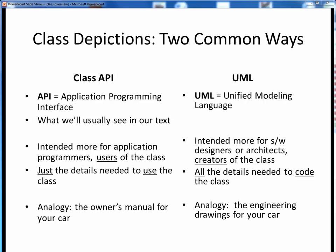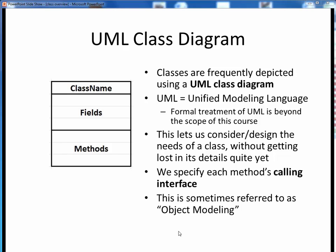So we've just seen both the API and the UML for a new Java class. Here's a summary of the differences between them. The API is what we'll usually see in our text when new classes are introduced. But remember, CS12Date is something that I came up with, so you won't find it anywhere in the textbook. An API is intended for application programmers such as ourselves — for users of a class. It gives us only enough details to be able to use a class. By contrast, UML is usually intended for the designers or creators of a software class. It is supposed to give all the details needed to create the class. For example, you might think of an API as being like the owner's manual for a car, but the UML as being the detailed engineering drawings for that car.